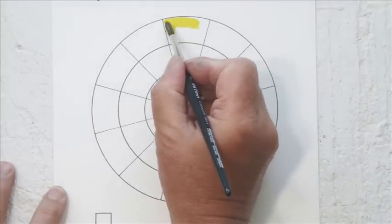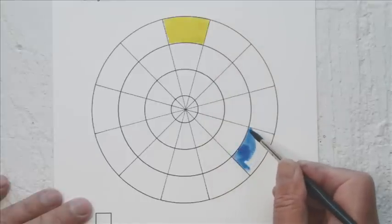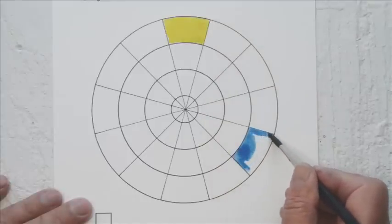Once we've done this, do the same for the other two primary colours, leaving three spaces between each colour around the edge of the wheel.